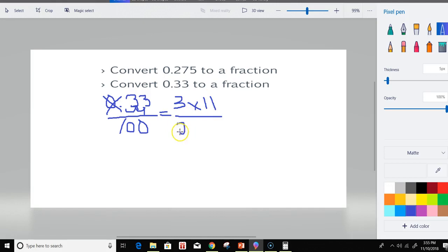And then factors of 100 is 2 times 2, which is 4. Let me use the multiplication symbol so we don't get confused with the decimal. And then times 5 times 5.